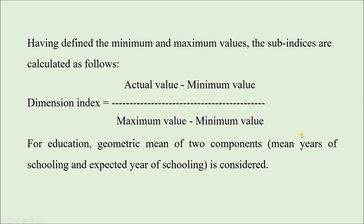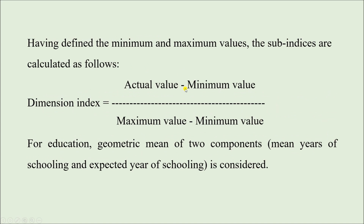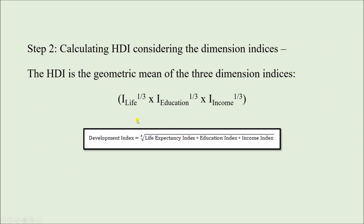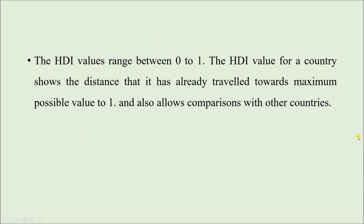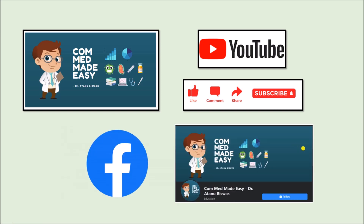To revise: HDI has three dimensions — long and healthy life, knowledge, and standard of living. For each dimension there are indicators, and from them we calculate the dimension index using minimum value, maximum value, and the actual value for that country. We then take the geometric mean — multiplying the three dimension index values and taking the cube root — to find the HDI value. HDI can be used to compare countries in terms of human development performance, and India is currently in 132nd position. Thank you — please subscribe, share with batchmates, juniors, and friends, and follow our Facebook page. See you in the next video.